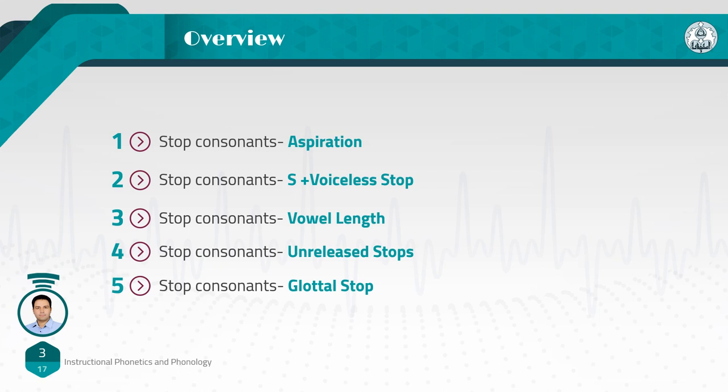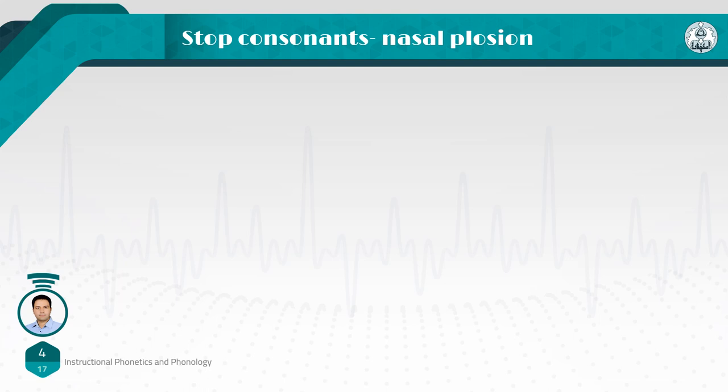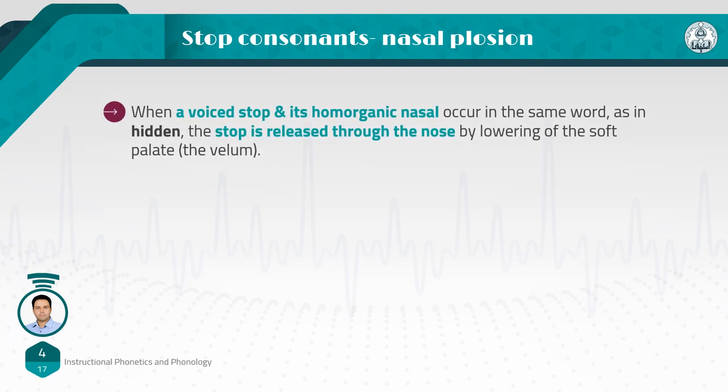Today, we are going to talk about other characteristics of stop consonants, and later we will talk about fricatives and affricates. Stop consonants: nasal plosion. When a voiced stop and its homo-organic nasal occur in the same word as in 'hidden,' the stop is released through the nose by lowering of the soft palate, or the velum.